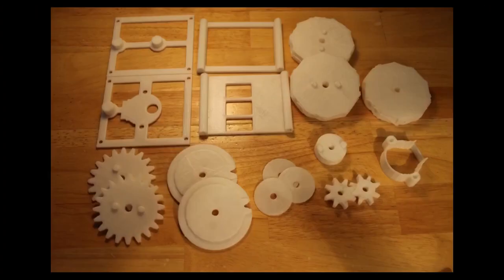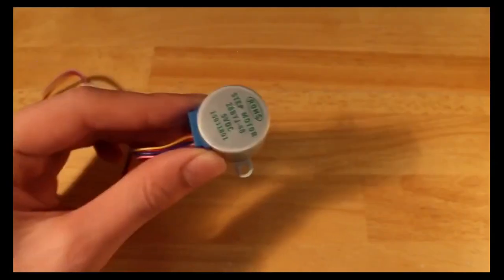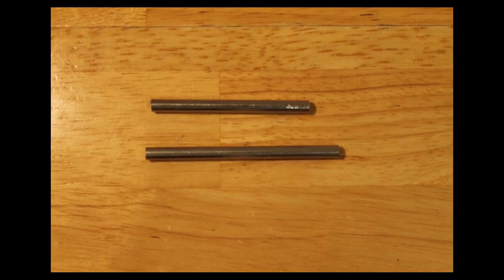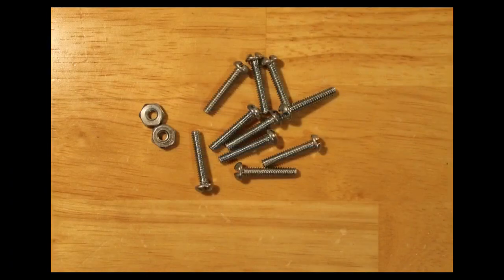So here's all the 3D printed parts you'll need. There are 18 parts in total. As well, you will also need one of these small stepper motors, two 316 steel rods in a length of 2 1⁄4 and a 2 3⁄4, as well as 10 1⁄8 by 3⁄4 machine screws and 2 nuts.